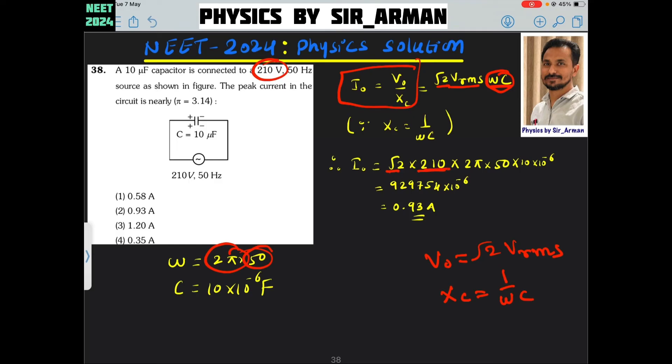It is 2 pi into F. F is 50 hertz as given, and the capacitance C is 10 into 10 raised to minus 6. If you solve this, you will get 0.93 ampere.